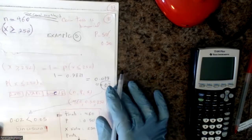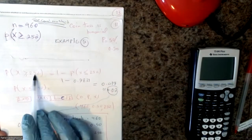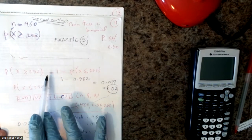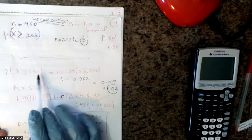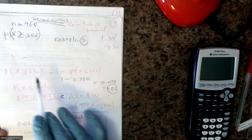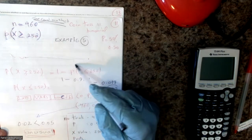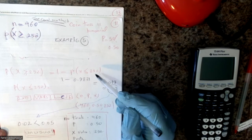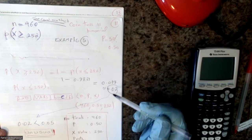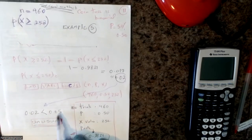Here is an example with 460 trials. If you want to calculate the probability of x greater than or equal to 252, it is almost impossible to add all values from 252 to 460 individually. Instead, write it as 1 minus the probability of x less than or equal to 251. The calculator computes from 251 downward. The result is 0.02, which is less than 5%, so it is unusual.